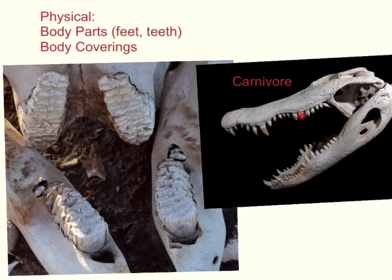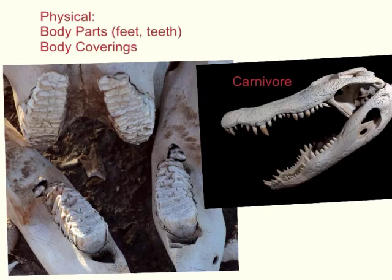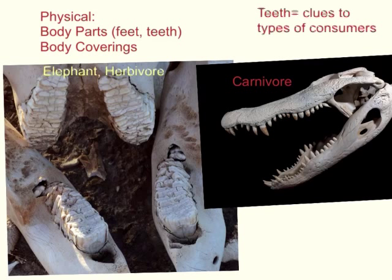At the opposite end of the spectrum, these are actually elephant teeth. Those flat teeth help the elephant grind down the plants it eats, which means the elephant is an herbivore. By looking at their teeth, you can tell what sorts of things they need in their environment in order to eat and survive. Teeth can actually give us clues to the types of consumers these animals are.